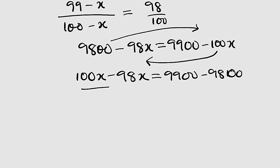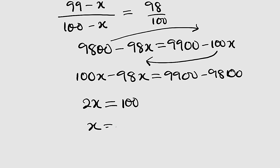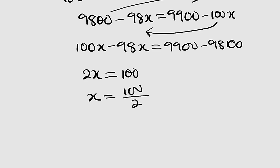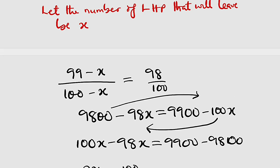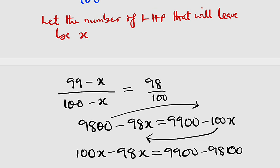Simplifying: 2x equals 9900 - 9800, which is 100. Dividing both sides by 2, x equals 100 divided by 2, so x equals 50.